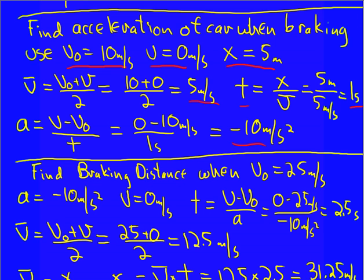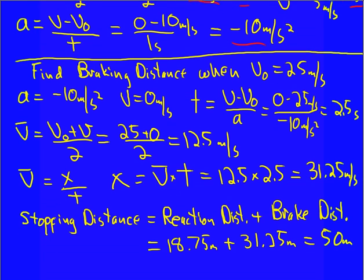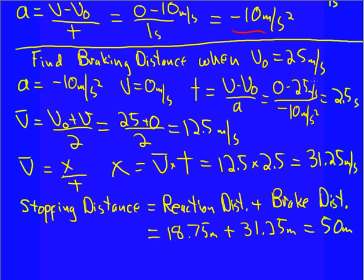Now we can use that acceleration to calculate the braking distance. And so for an initial velocity of 25 meters per second, the acceleration is the same for all cases. It depends on the brakes and the car, not so much on the initial speed. And, again, we're stopping. So the final speed we know. And so the time to stop is V minus V0 over a. Just how much time does it take to lose 25 meters per second when we're losing 10 every second that goes by. And so it's 0 minus 25 over negative 10, 2½ seconds.